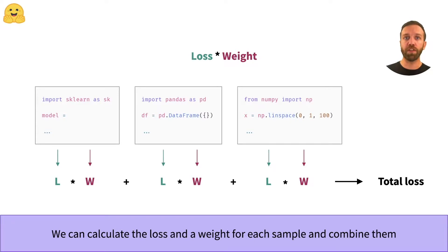For each sample, we get a loss value during training, and we can combine that loss with a weight. Then we can create a weighted sum or average over all samples to get the final loss for the batch.